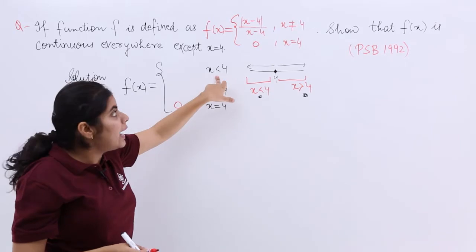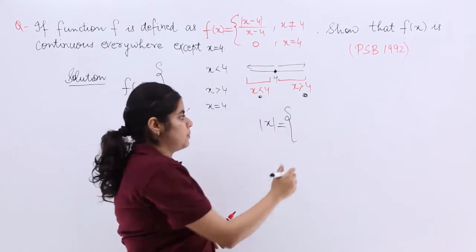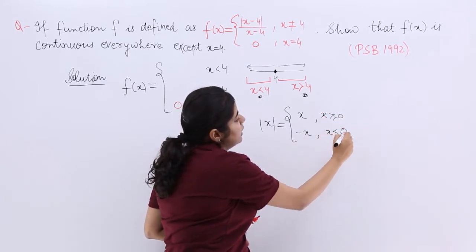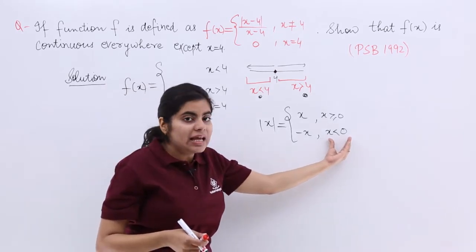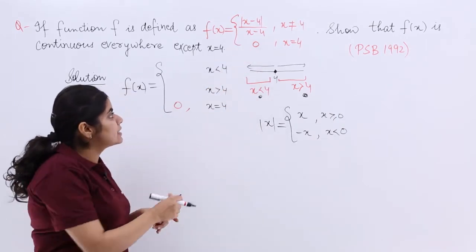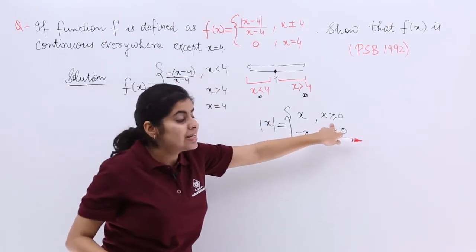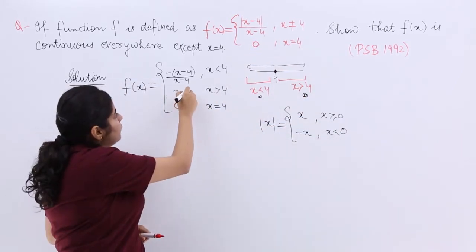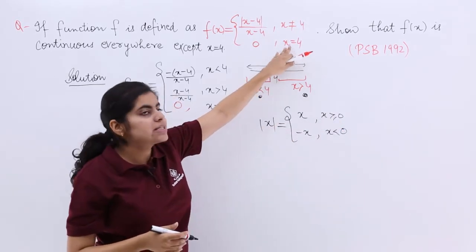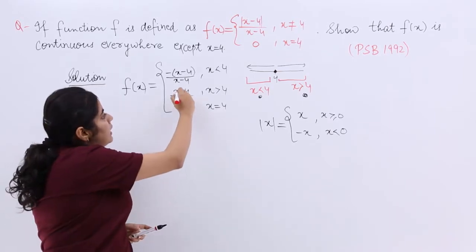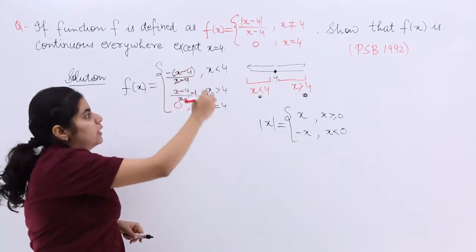When x is less than 4, we need to expand the modulus |x - 4|. Just as mod x expands to x when x ≥ 0 and -x when x < 0, similarly |x - 4| opens with a negative sign when x < 4 and a positive sign when x > 4. So when x < 4, the mod opens negative, x - 4 cancels giving -1. When x > 4, it opens positive, x - 4 cancels giving +1.